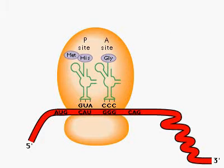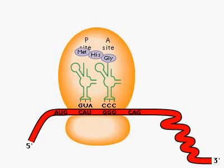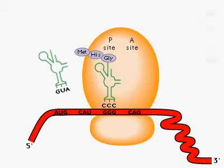This cycle is repeated as the ribosome travels along the mRNA, resulting in a growing polypeptide chain.